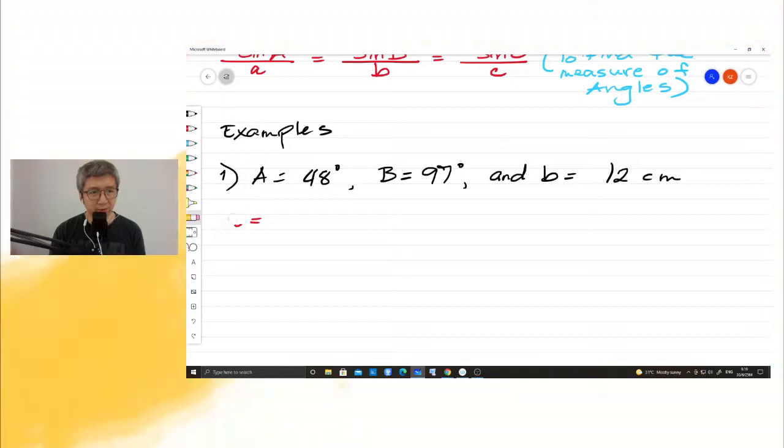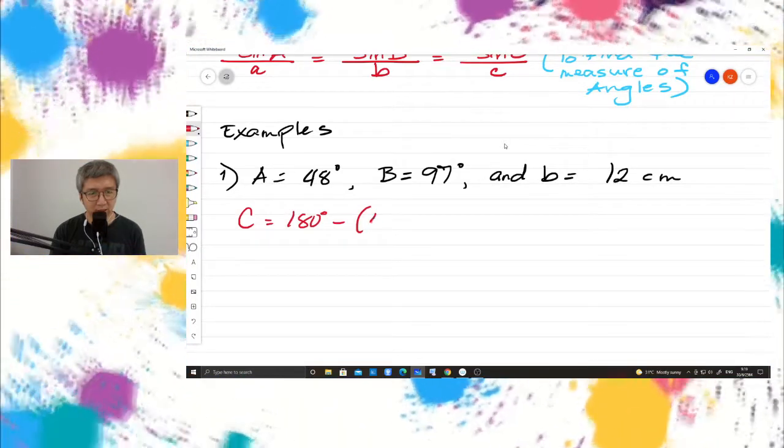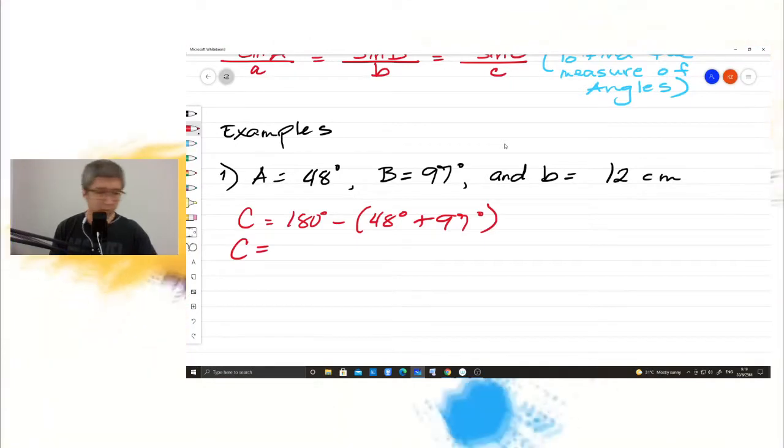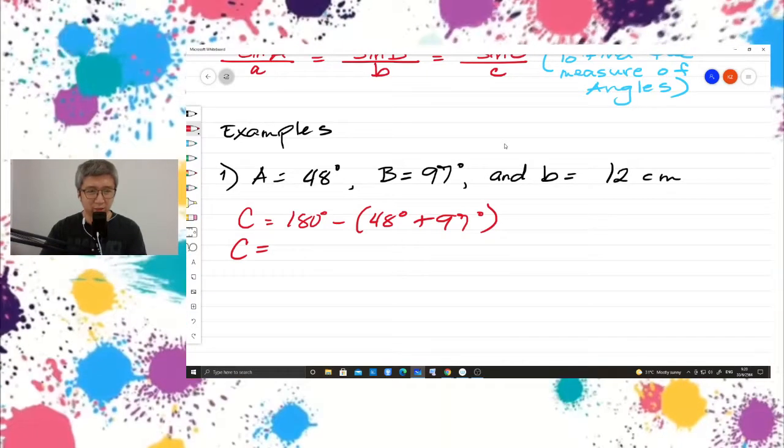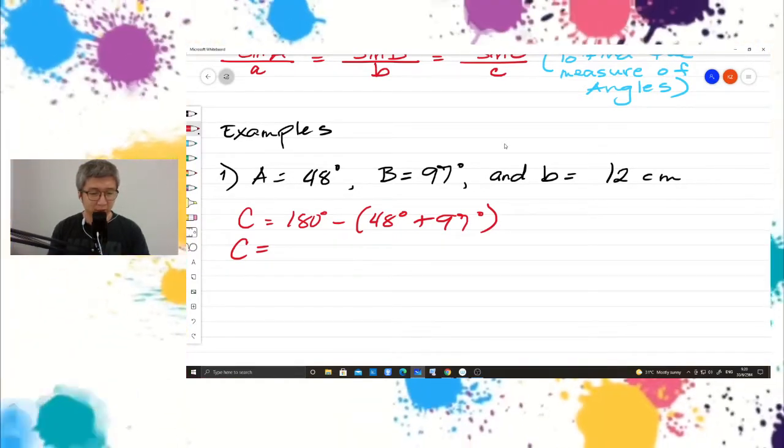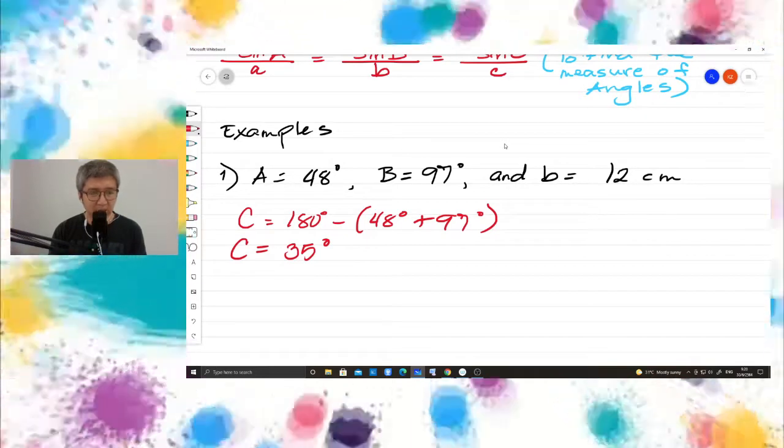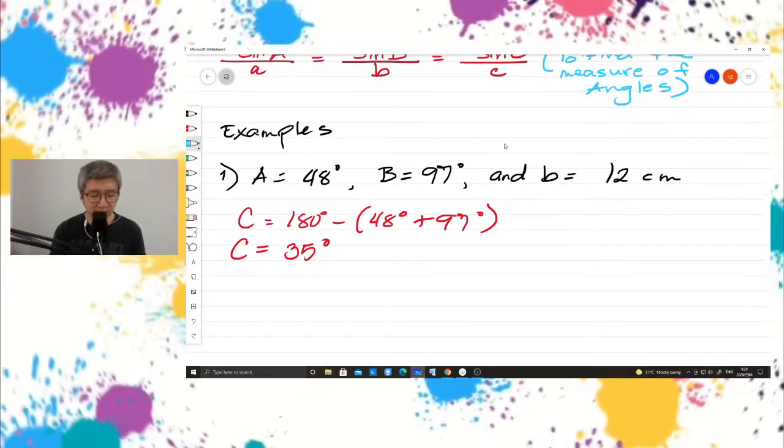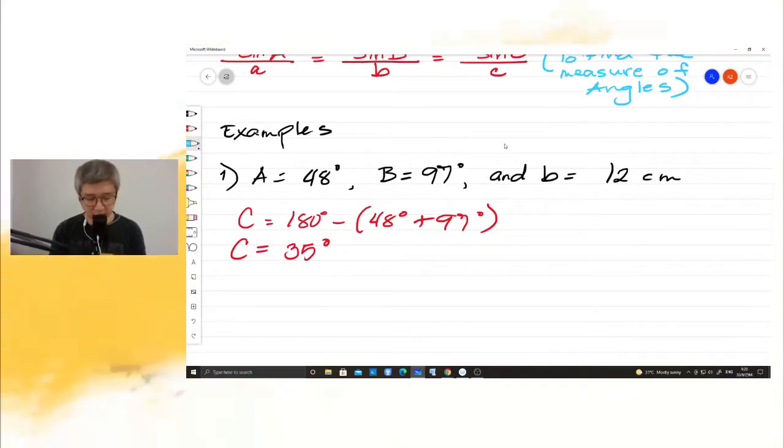So we have 180 degrees minus 48 degrees plus 97 degrees. So the measure of angle C is 35 degrees. Now, by looking at the angles, there's no 90 degrees here. So it means this is not a right triangle.